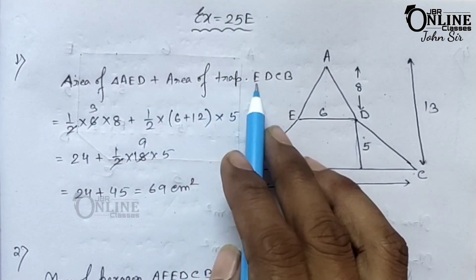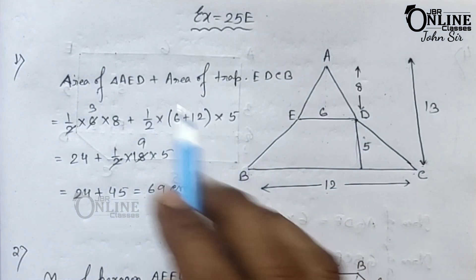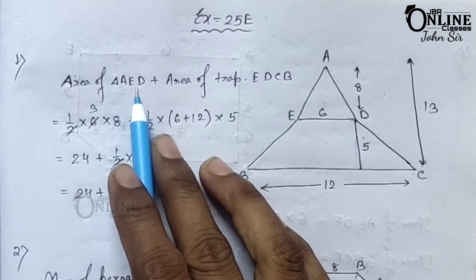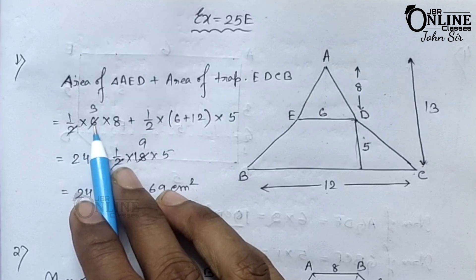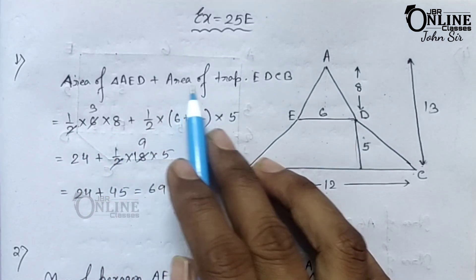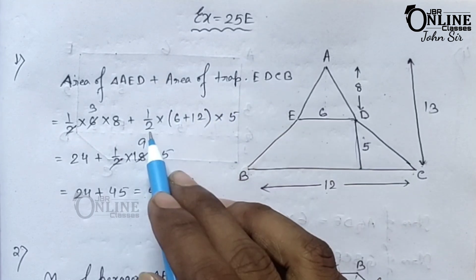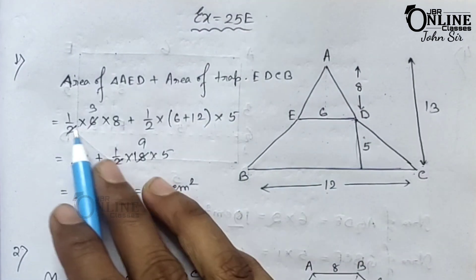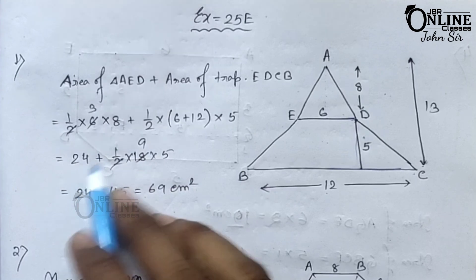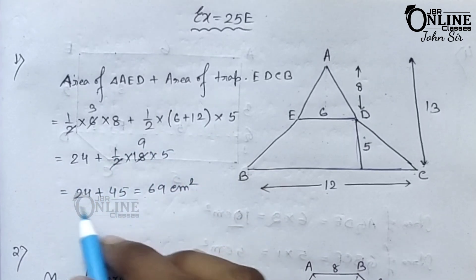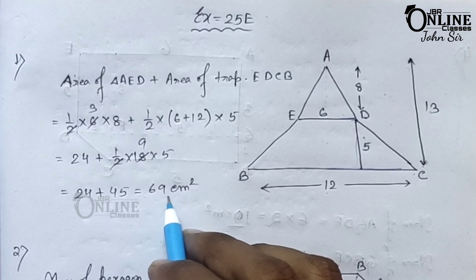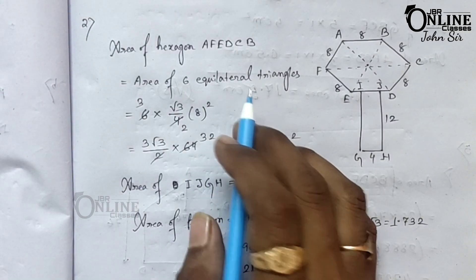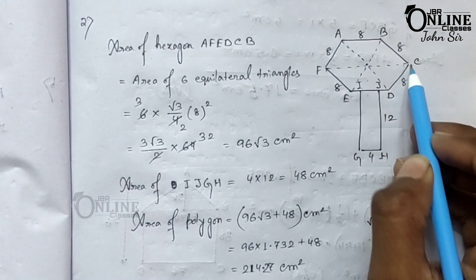Write down: area of triangle AED plus area of trapezium EDCB. The formula for the area of a triangle is half times base times height. The formula for a trapezium is half times sum of parallel sides times height. So: half times 6 times 8 equals 24, plus half times (6 plus 12) times 5 equals 45. So 24 plus 45 equals 69 centimeters square.